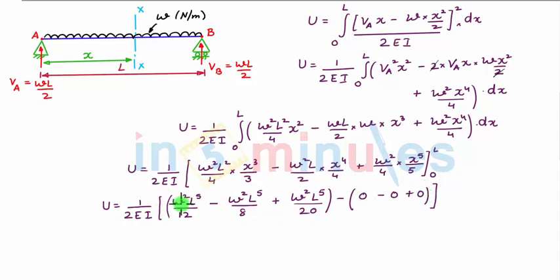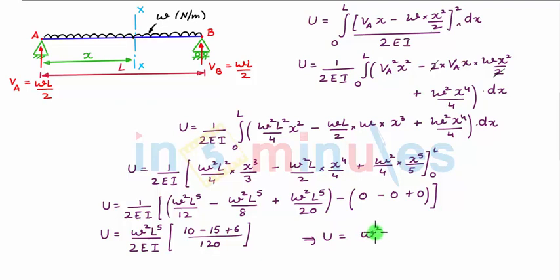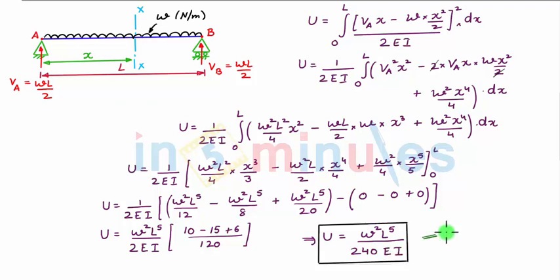Taking W²L⁵ outside, strain energy U = (W²L⁵/2EI) · [1/12 − 1/8 + 1/20]. Taking the LCM of 12, 8, and 20, which is 120, we get 10 − 15 + 6 = 1/120. Therefore, strain energy U = W²L⁵ / 240EI. Hence proved.